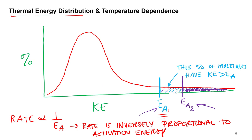Rate is inversely proportional to the activation energy. The higher the activation energy leads to a lower rate because fewer molecules have enough kinetic energy. So that's one relationship we wanted to walk away with. But another one is temperature.